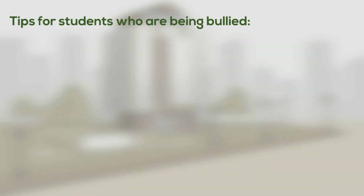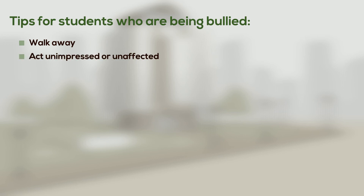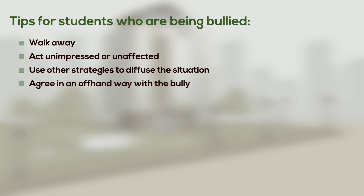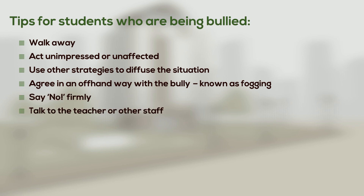The following are some tips for students who are being bullied in schools. Encourage those who are being bullied to walk away, to try to act unimpressed or unaffected, to use other strategies to diffuse the situation — like agreeing in an offhand way with the bully when they say offensive or negative things, also known as fogging — and to say no firmly. To talk to the teacher or other staff, like the school guidance officer.